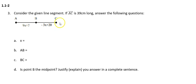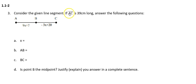I also have information from the problem telling me that AC is 39 centimeters long. AC is written with a hat and no arrows, which tells me it's talking about segment AC that starts at A and goes all the way across to C — the entire segment. So the entire length is 39 centimeters.